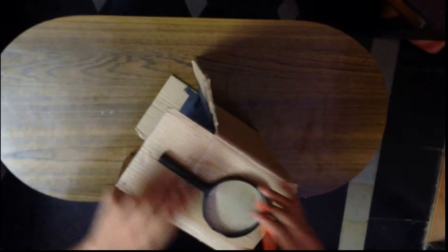Make sure that it looks like this. Now trace the magnifying glass on the box and cut that part out.